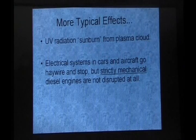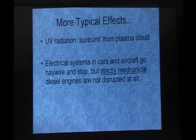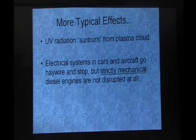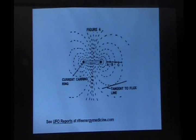Electrical systems in cars and aircraft go haywire, stop, but strictly mechanical diesel engines are not disrupted at all. This, again, shows a cross-sectional cut, those two little black dots, that's the current carrying ring, and then those little dashed lines are the symbols for the magnetic field that go with a ring like that.